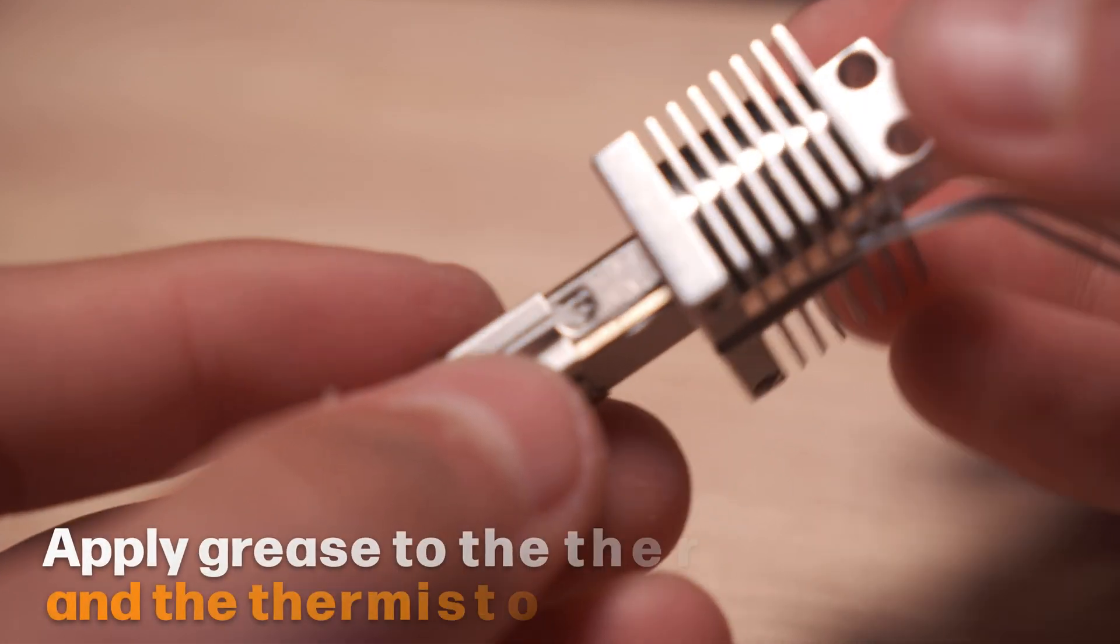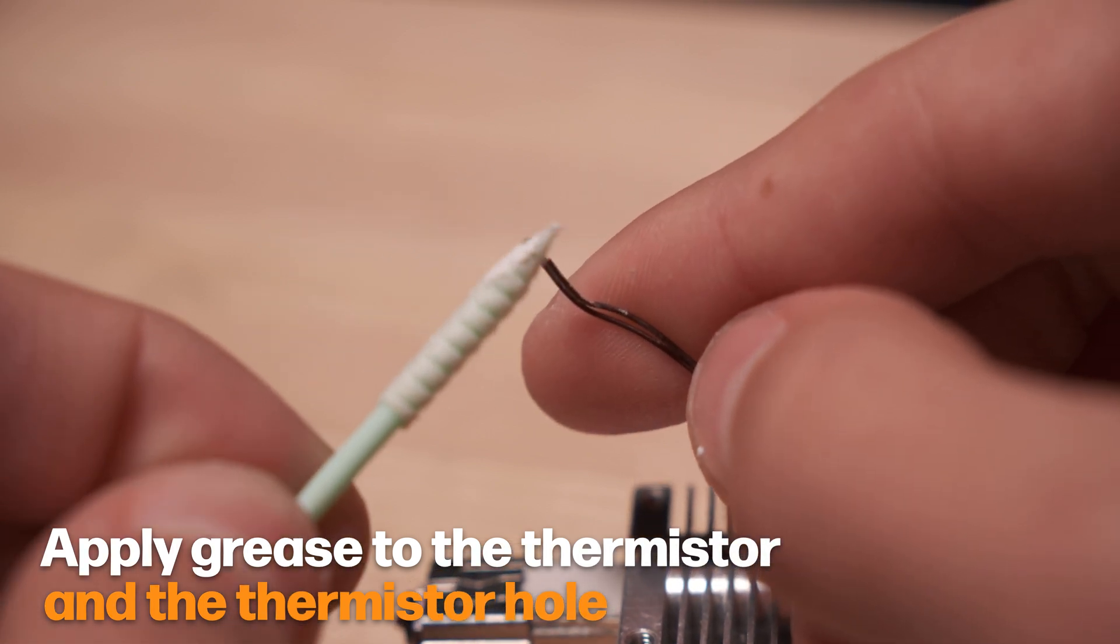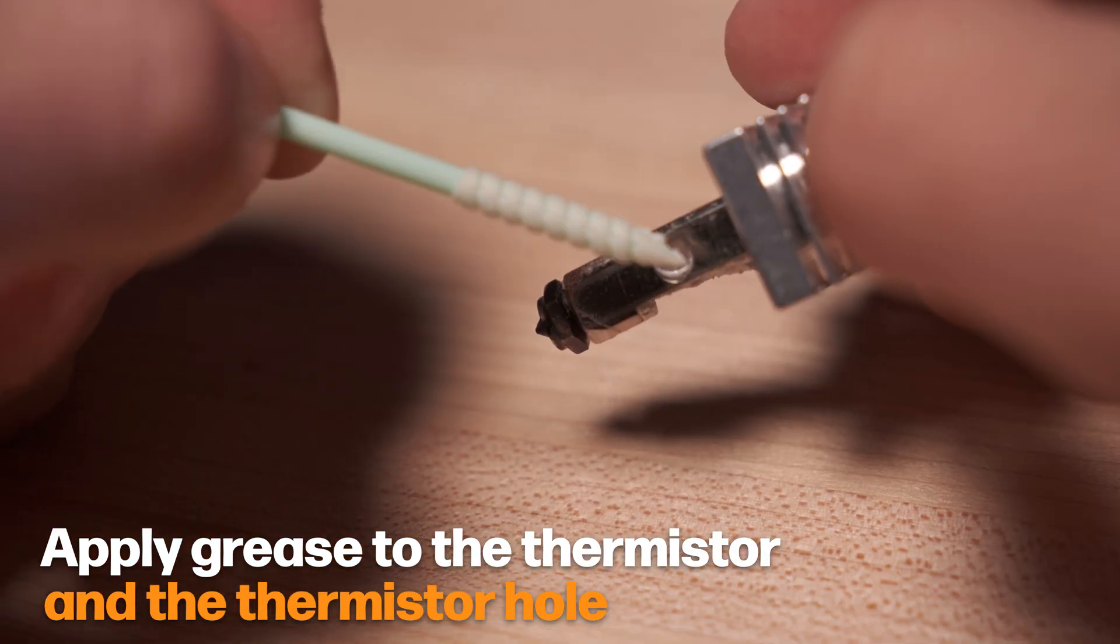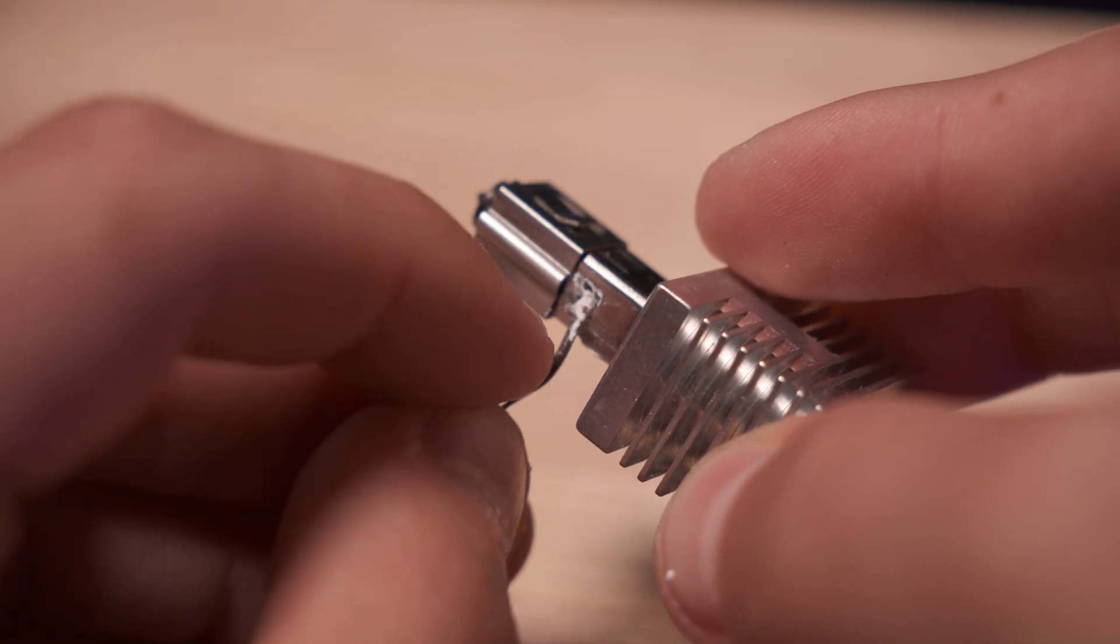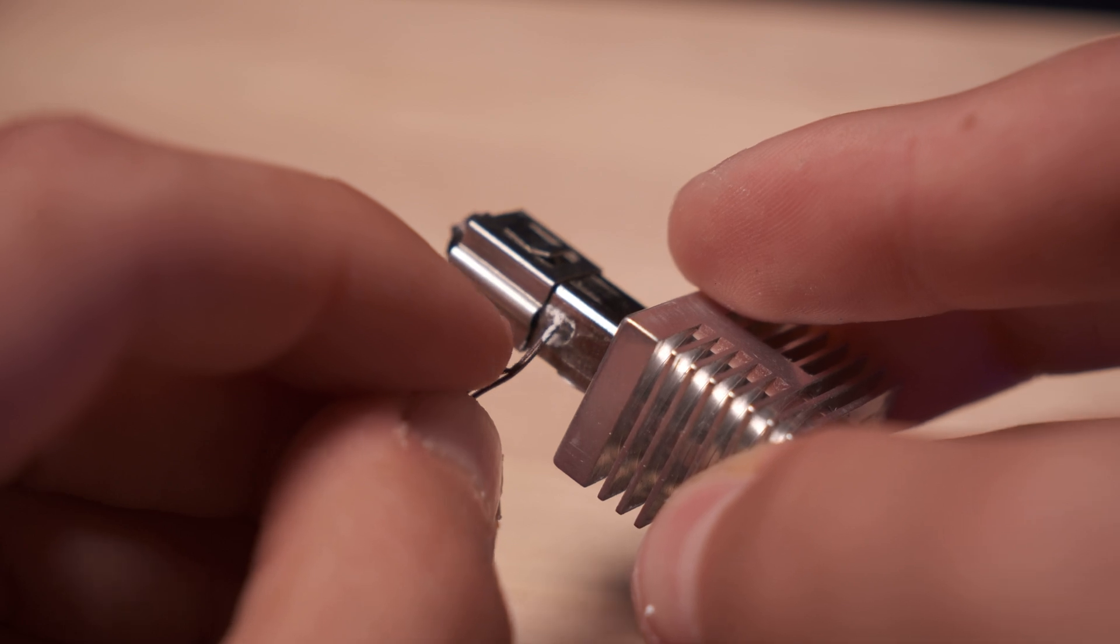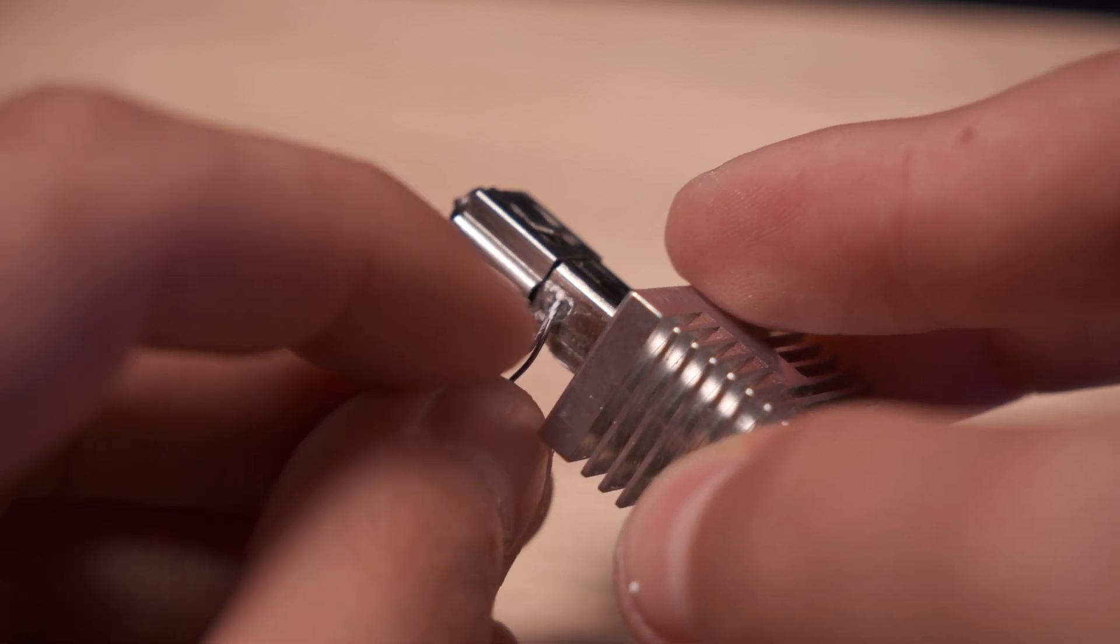You'll see the hole for the sensor on the side. Put thermal grease around the tip of the sensor and into the hole. And then insert the sensor into the hole. You want thermal grease to be fully covering the tip of the sensor.